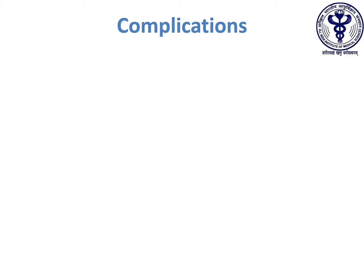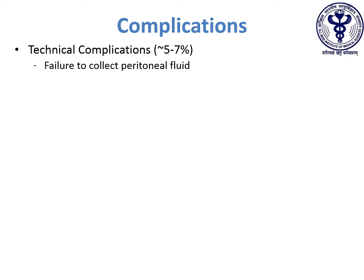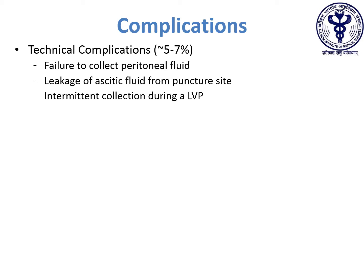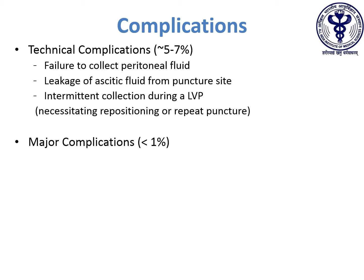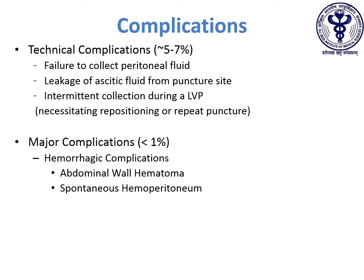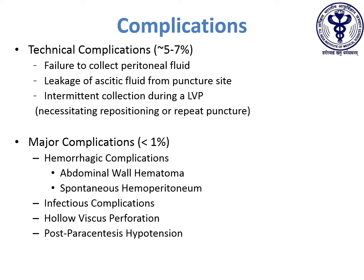Complications encountered during paracentesis include technical complications seen in about 5 to 7% of procedures, which include failure to collect peritoneal fluid, leakage of ascitic fluid from the puncture site, and intermittent collection during large volume paracentesis — these necessitate repositioning or repeat puncture. Major complications are significantly rarer and include hemorrhagic complications such as abdominal wall hematomas or spontaneous hemoperitoneum, infectious complications such as secondary bacterial peritonitis, hollow viscous perforation, and post-paracentesis hypotension, which may be encountered with large volume paracentesis particularly when albumin is not appropriately replenished.